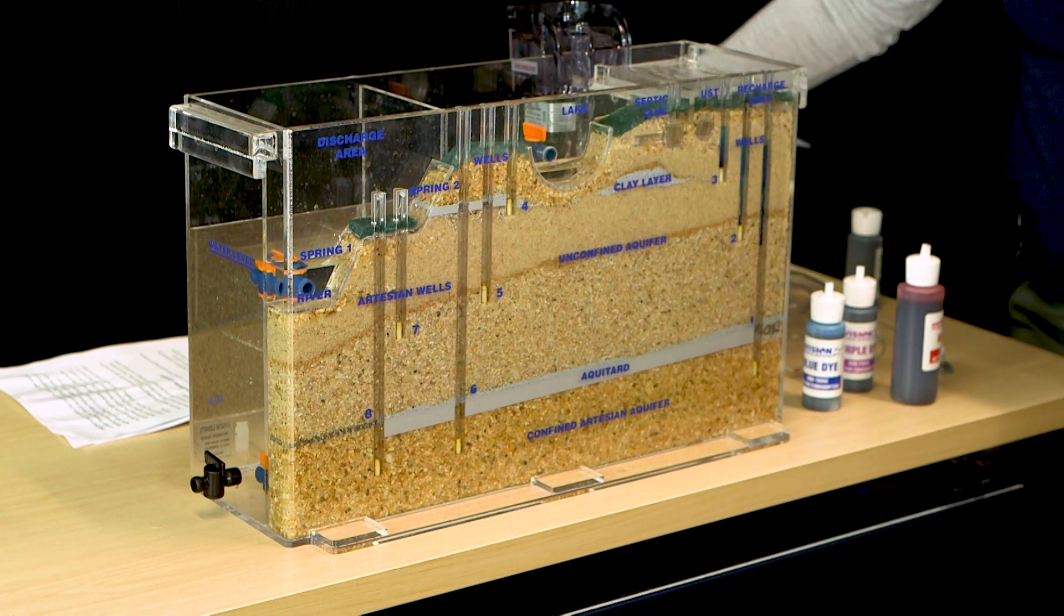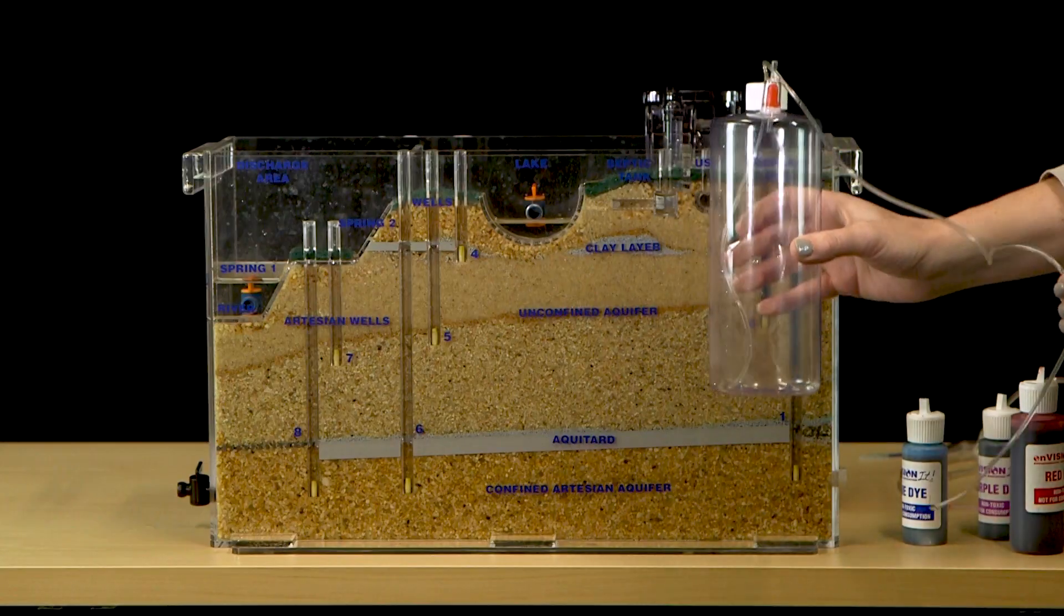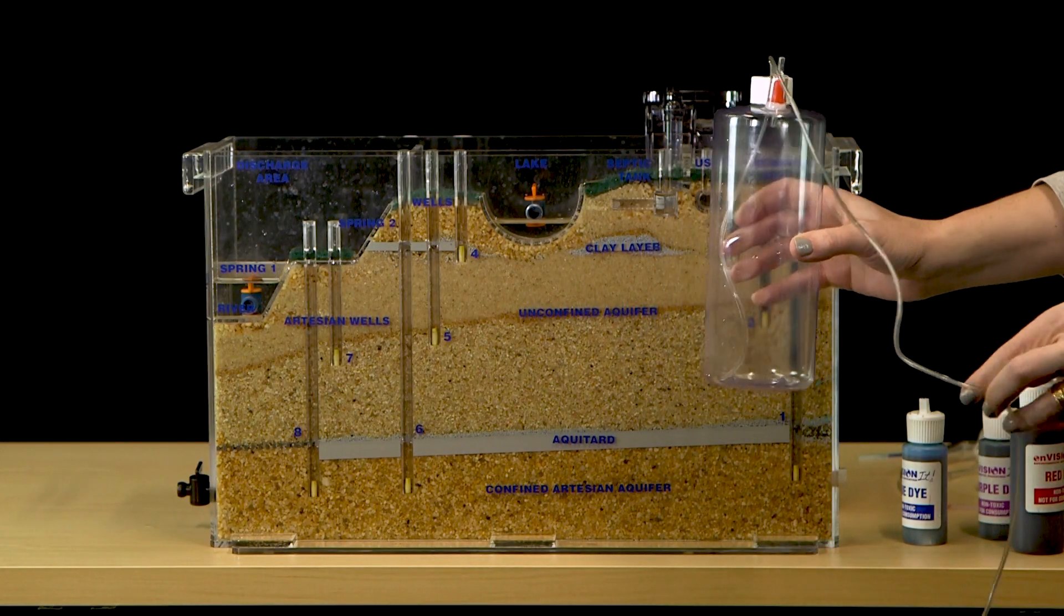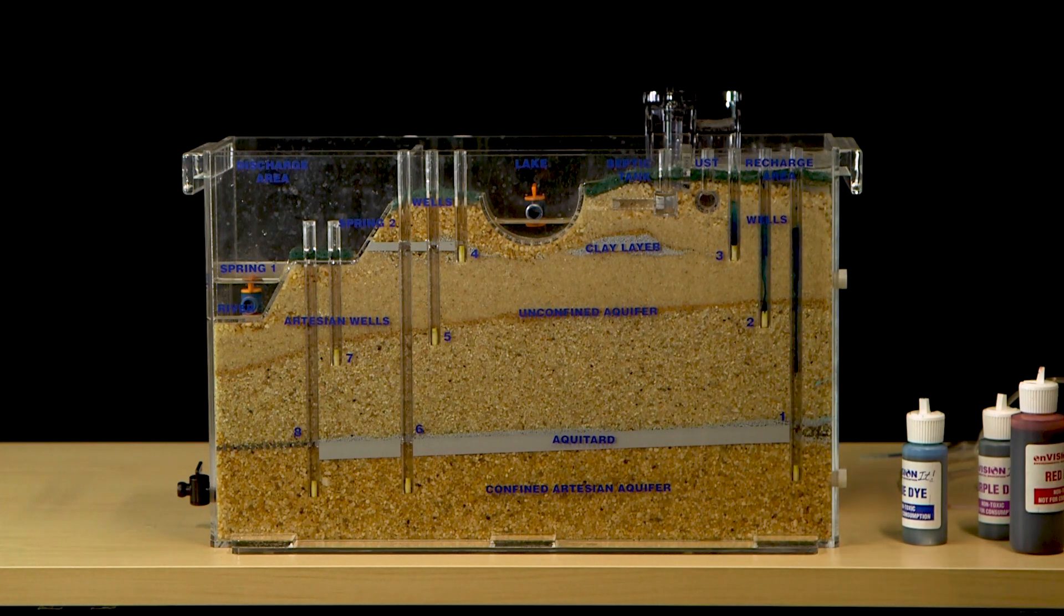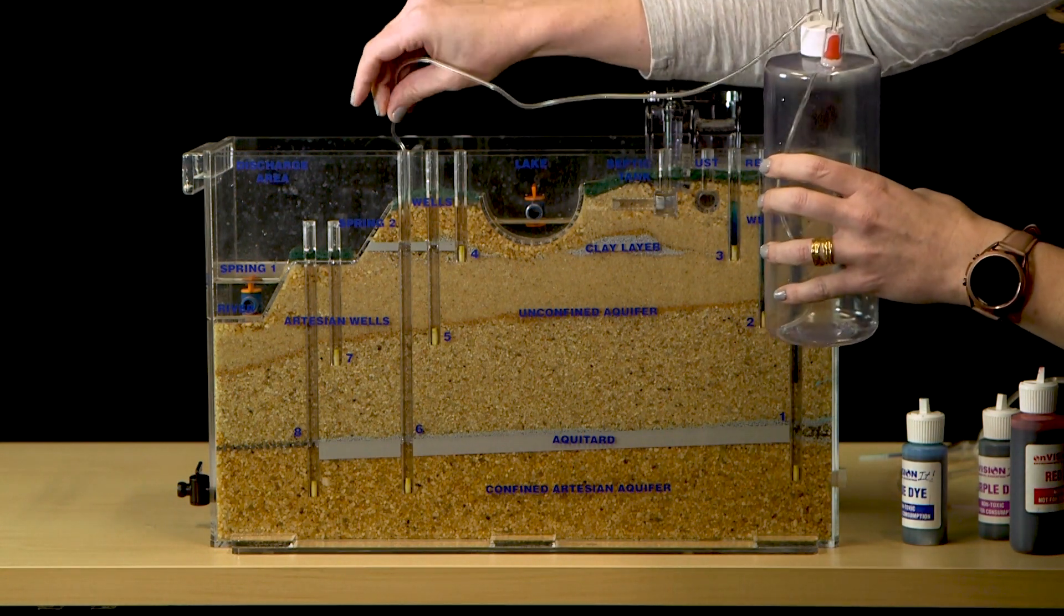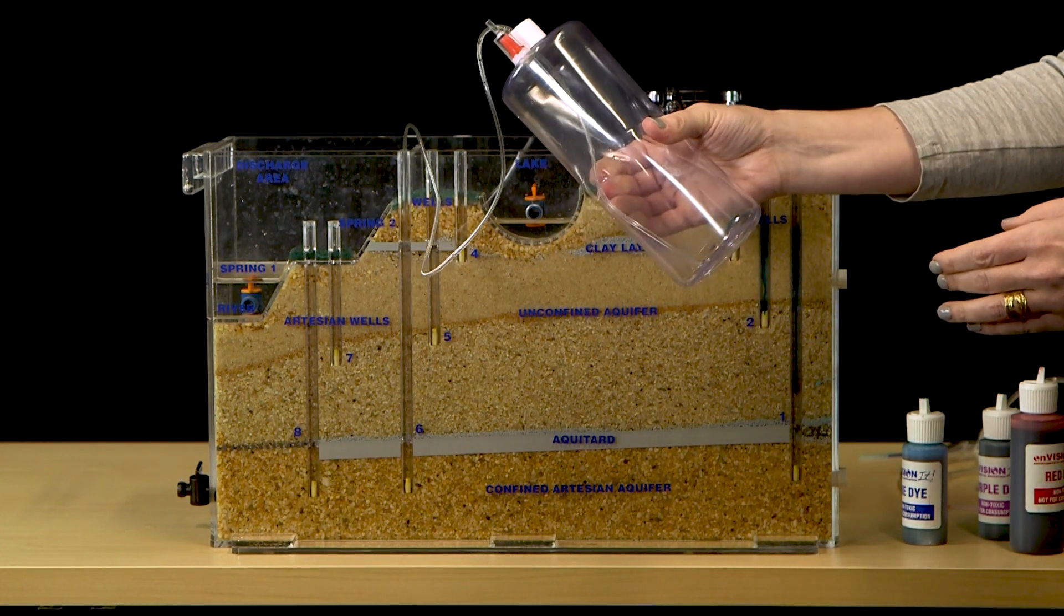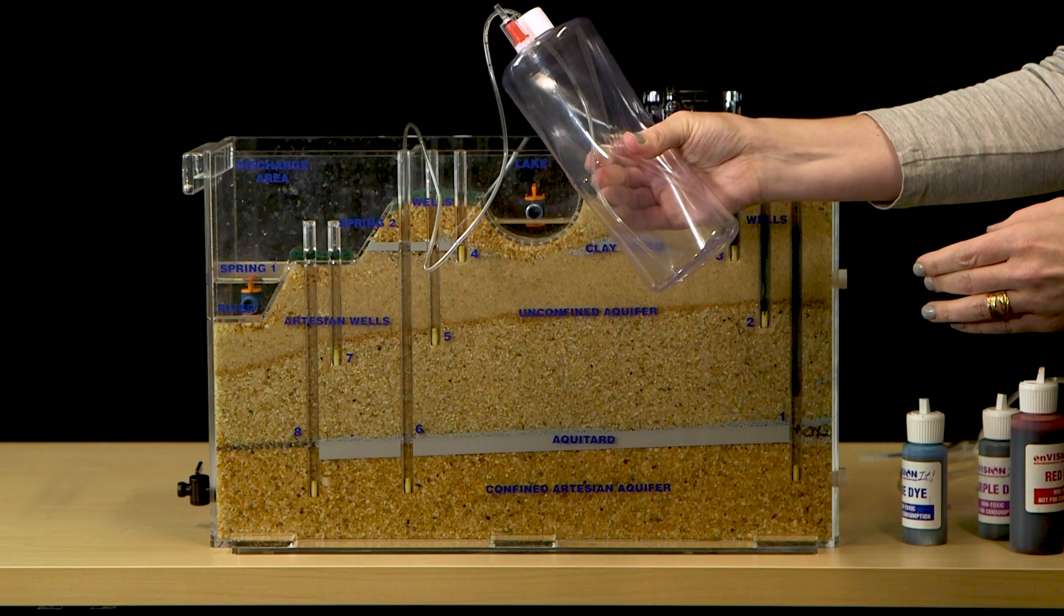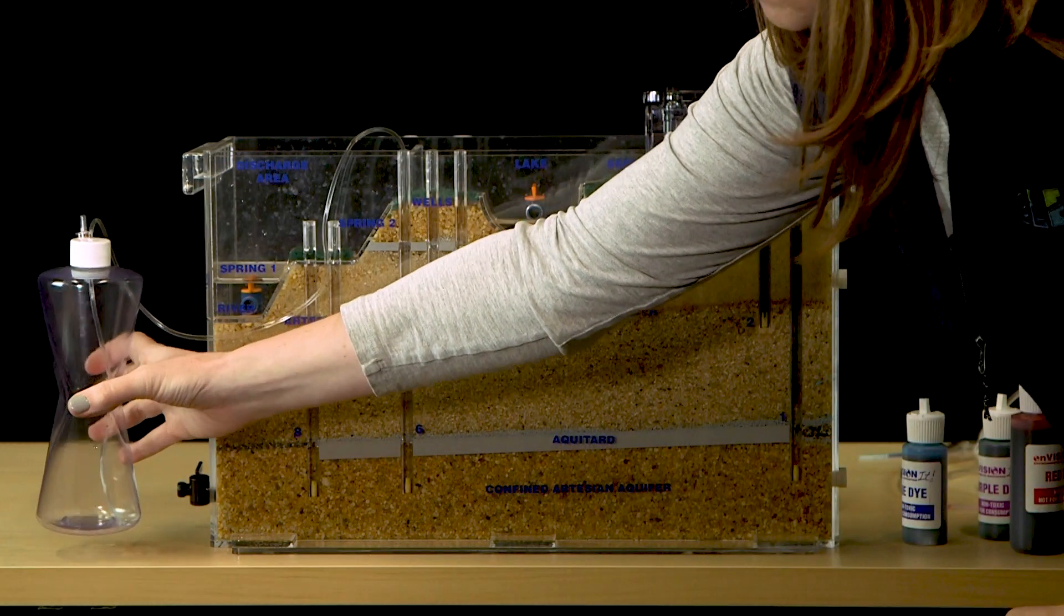The model can demonstrate how water is retrieved from wells for human use. The siphon bottle demonstrates low volume pumping from a well, much like a private residential well. To use the low volume pump, insert the tubing from the cap into a well. Gently squeeze the middle of the bottle to release air, then place the bottle on a table. Pumping will begin and will continue slowly while you continue the demonstration.